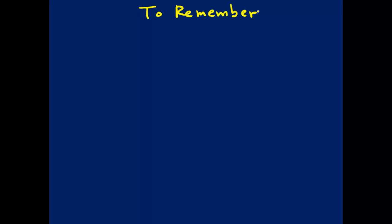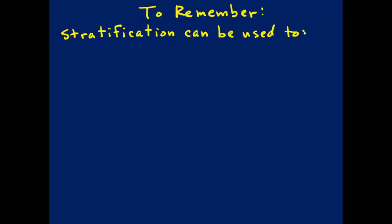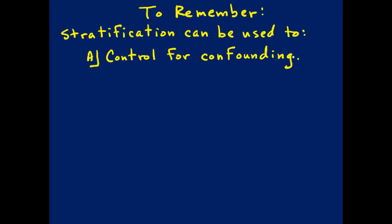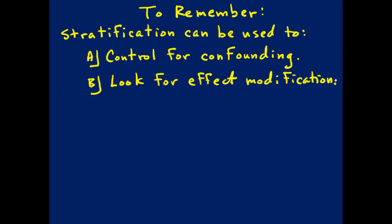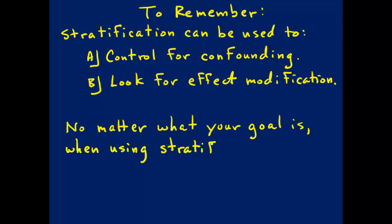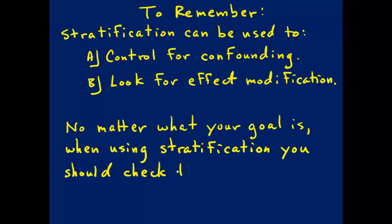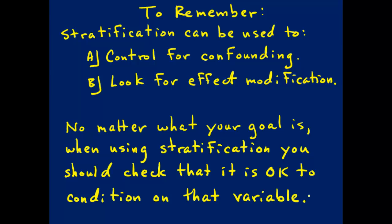To remember from this video: stratification can be used to either control for confounding or to look for effect modification. No matter which purpose you are using stratification for, when you stratify, you should confirm that it is okay to condition on the chosen variable by looking at its position in your DAG — if it has one at all — and make sure that you're not opening a backdoor path by conditioning on that variable through stratification.